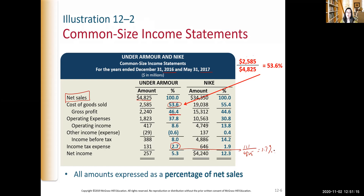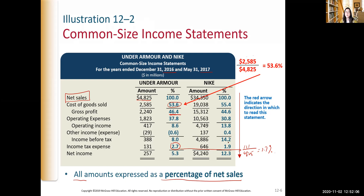In summary, all amounts are expressed as a percentage of net sales. The red arrow indicates the direction in which to read the statement. For Nike, cost of goods sold is 55% of net sales, resulting in 44% gross profit. Operating expenses are about 31% of sales, and operating income is about 14% of sales. Other income stands for 4% of sales, so income before taxes is about 14% of sales. Income tax expense is about 2% of sales, resulting in net income of 12.3% of sales.